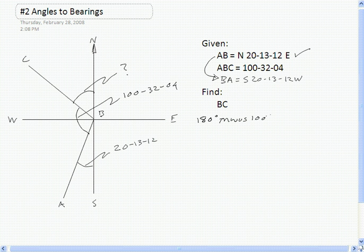So let's go ahead and do that. We'll start off, we'll write 180 degrees. That's 179-59-60. Then we will subtract the 100 degrees, so we're going to say minus, and do that math.